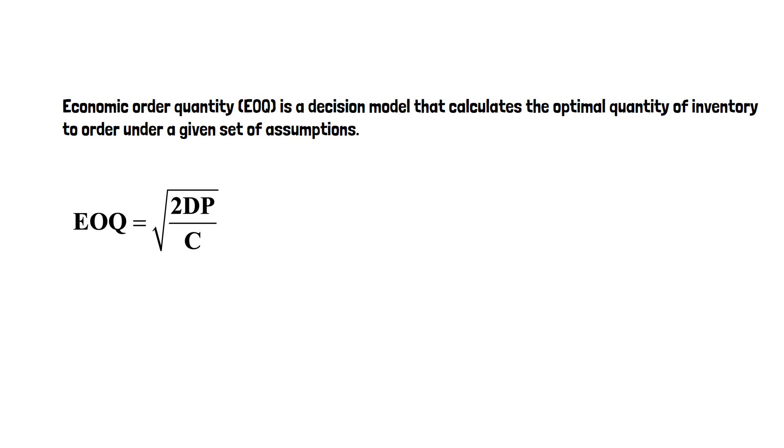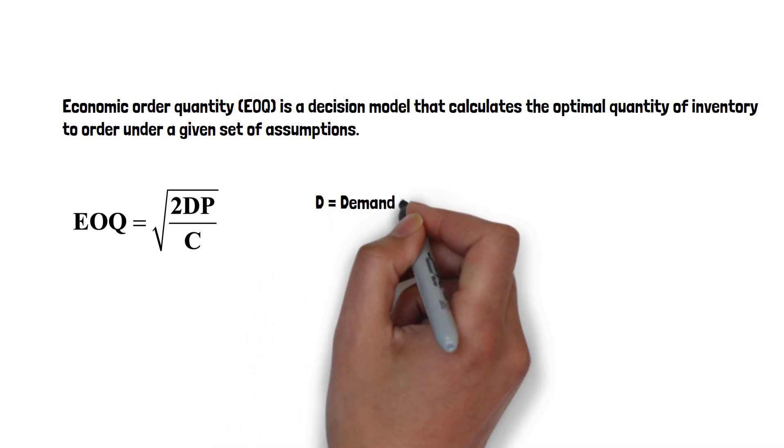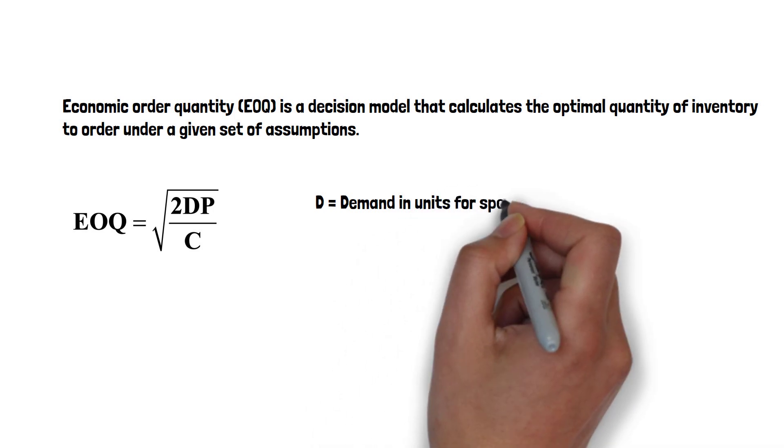The formula to calculate EOQ is like this: it's the square root of 2DP divided by C.